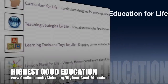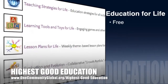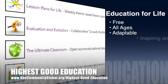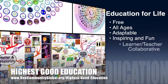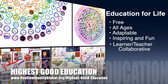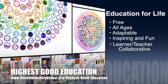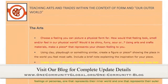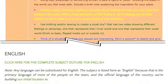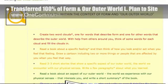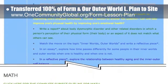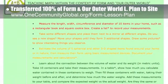One Community's approach to highest good education is open source and free shared, designed for all age groups, adaptable to any schooling environment, inspiring and fun for all participants, a learner-teacher collaborative, and it includes US Common Core standards. This week the core team — which includes pioneer members plus those helping who don't wish to be individually acknowledged — transferred all of the written content for the 'Form in Our Outer World' lesson plan to the website.